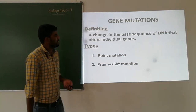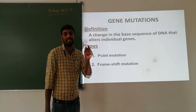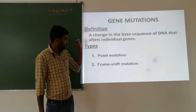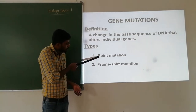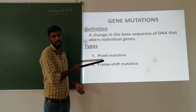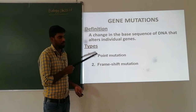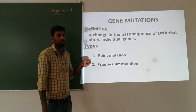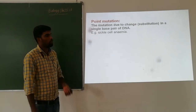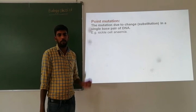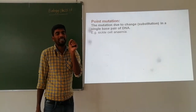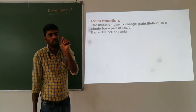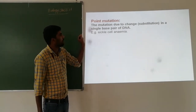Coming to gene mutation: it means changes in the base sequence of DNA that alters the expression of a gene. Mutations occurring in the expression of an individual gene are called gene mutations. Gene mutation has two types: point mutation and frameshift mutation — both are very important for academic exams.